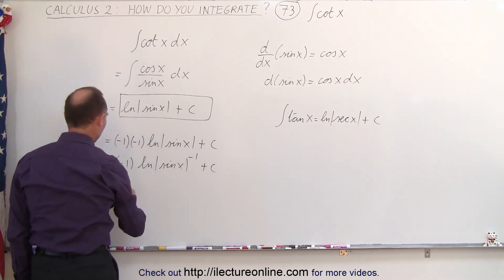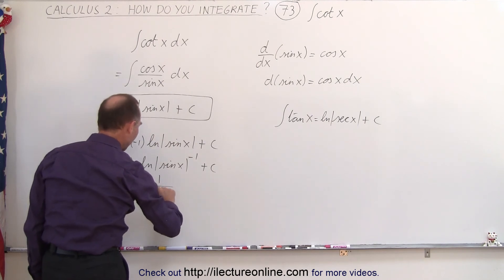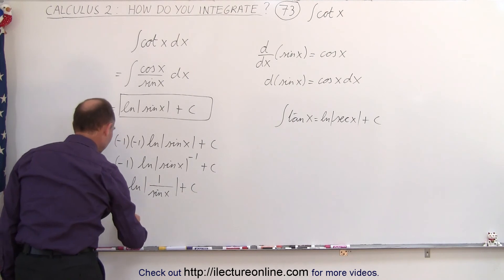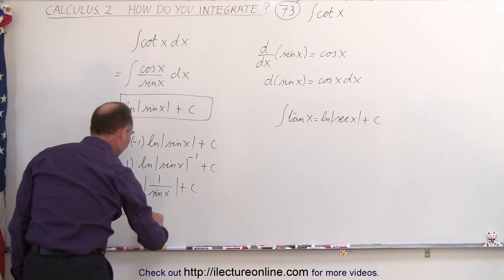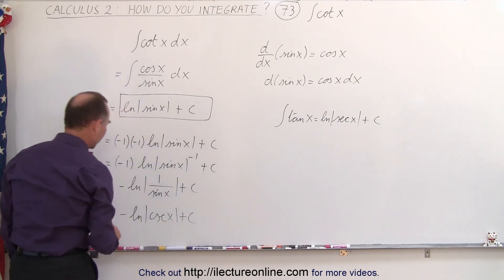And then, of course, this becomes equal to minus the natural log of 1 over the sine of x plus a constant of integration, which can then be written as the negative natural log of the cosecant of x plus a constant of integration.